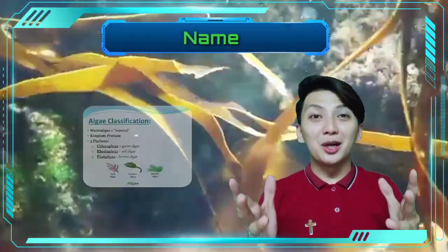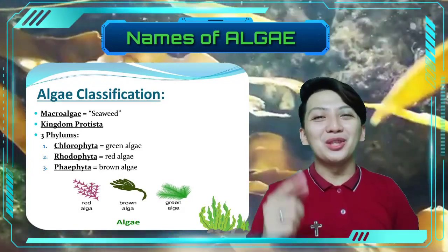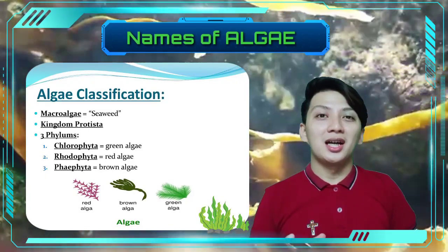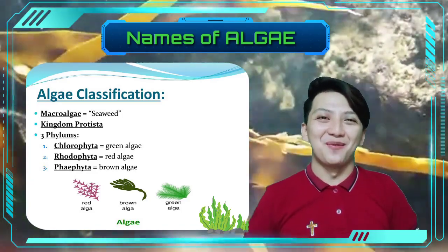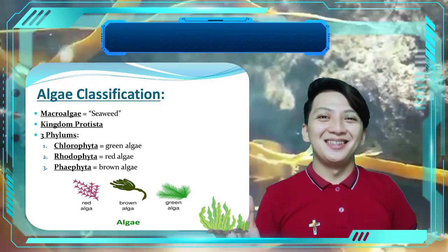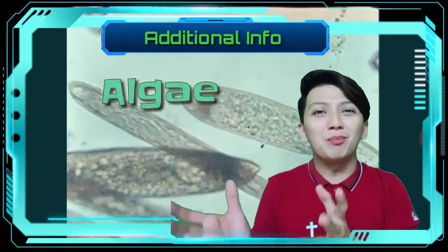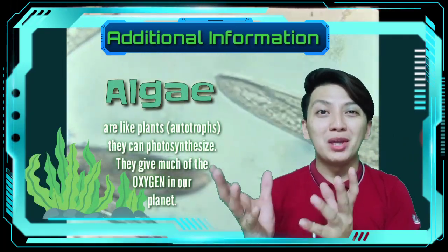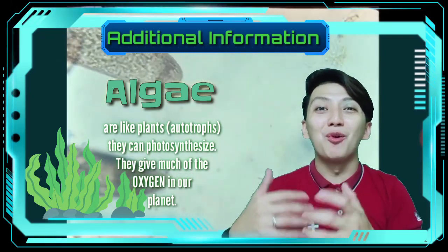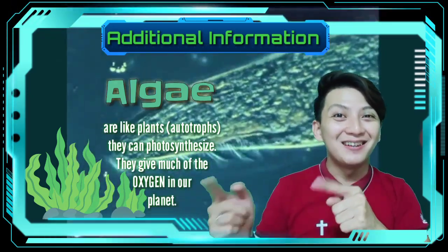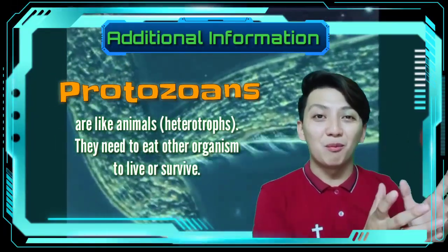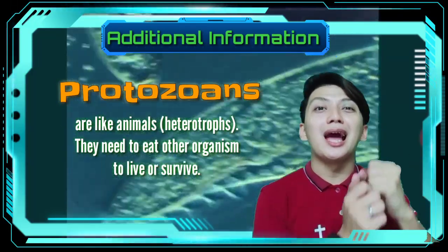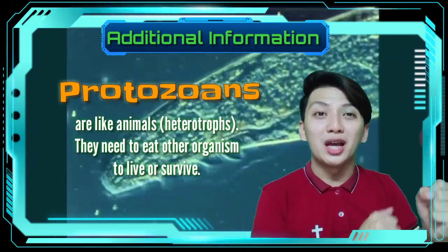Here are some examples of algal protists. Algae have different colors and those different colors of algae each have their own name. The algal protists are what we call autotrophs, meaning those algae or seaweeds can make their own food like plants on land. While protozoans, or animal-like protists, are what we call heterotrophs, meaning they need to eat other living organisms to survive.